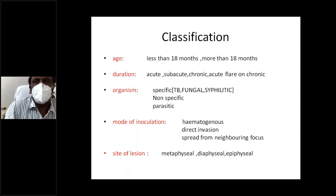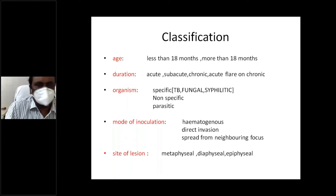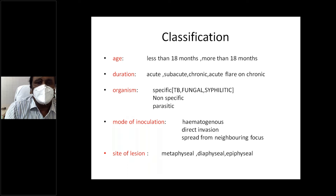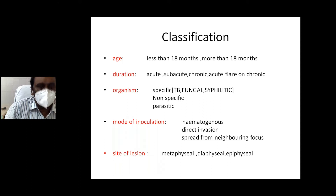In terms of age classification, it is divided into before 18 months, from 18 months to 16 years, and after 16 years. Age is important because there are anatomical implications in identifying the disease, diagnosing the condition, and understanding involvement of various parts of the bone. By duration: acute, subacute, and chronic.